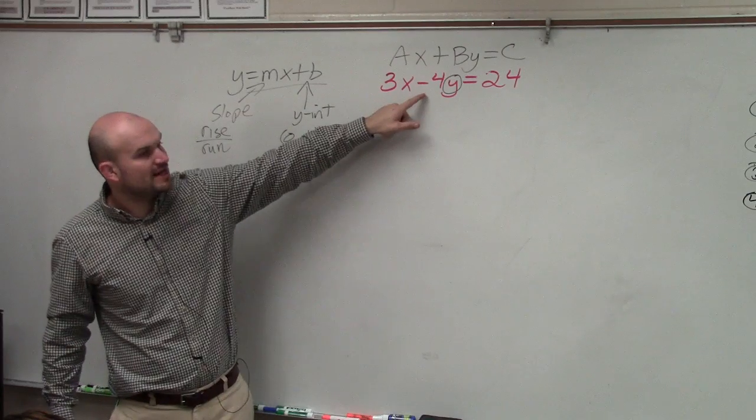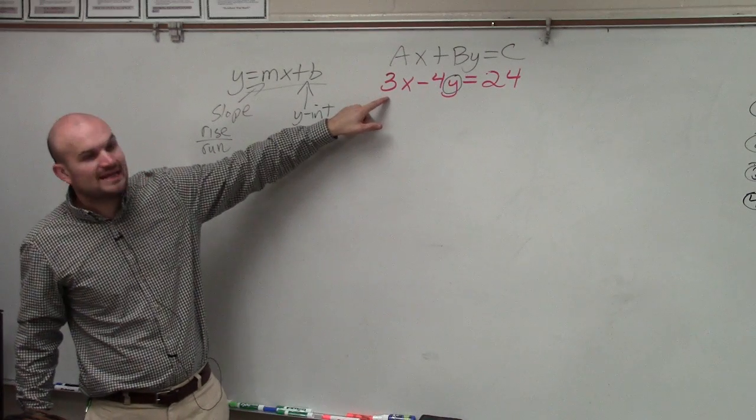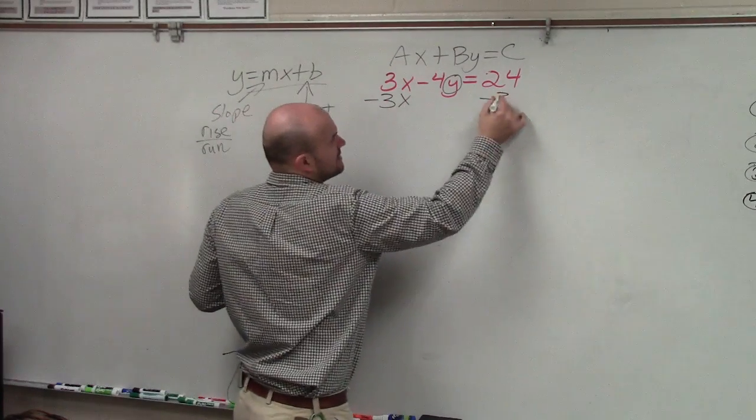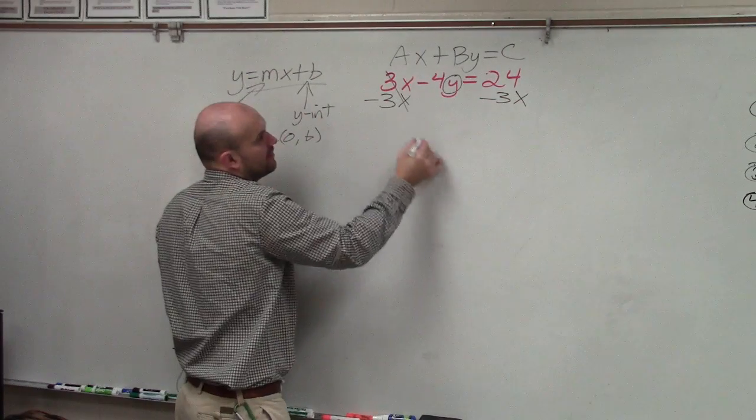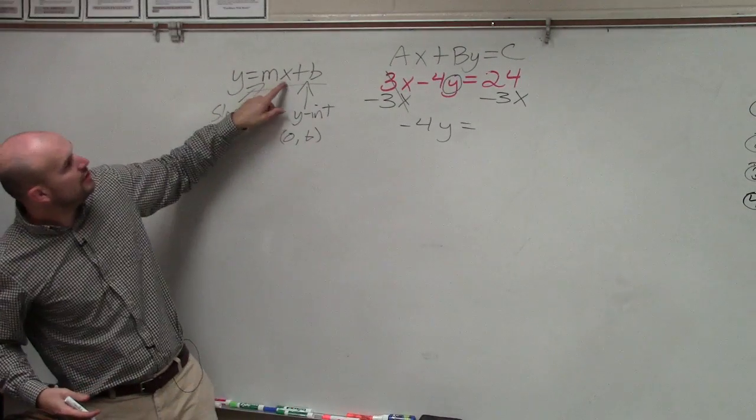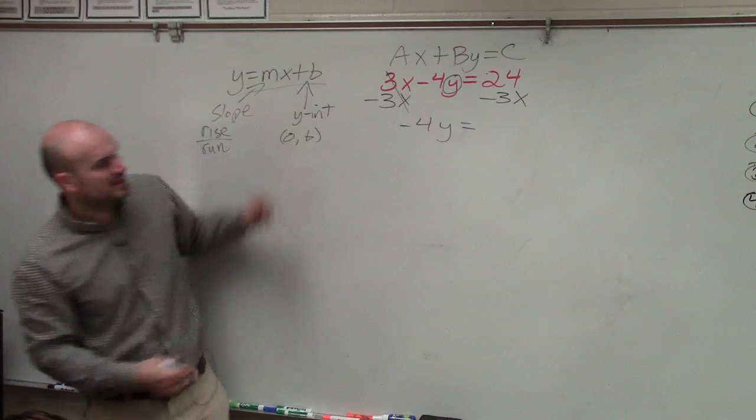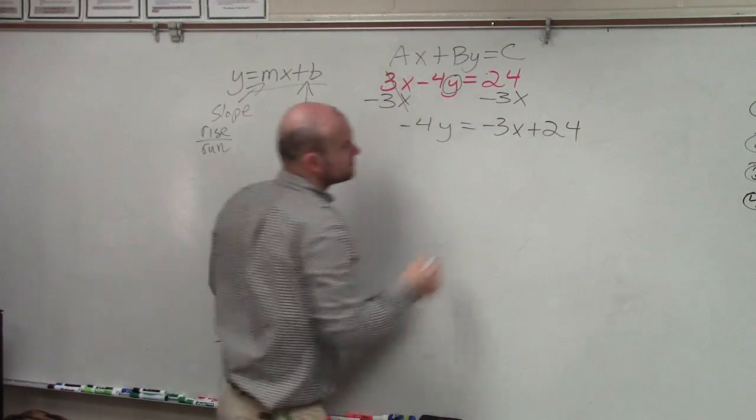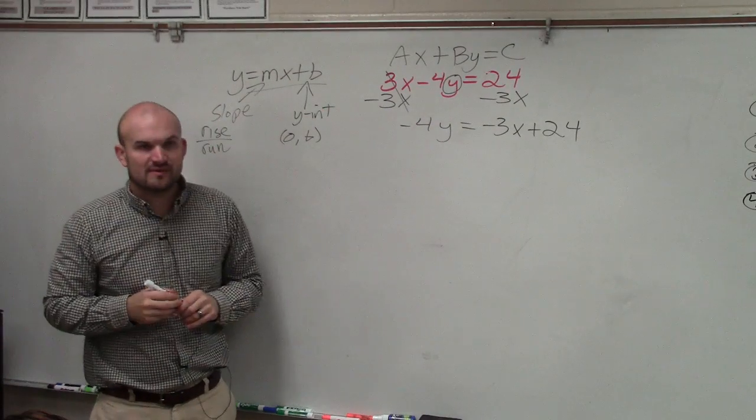So we see our variable is being multiplied by negative 4, and it's being added by 3x. So to undo adding 3x, we subtract 3x. Therefore, I have negative 4y equals. Now, since we're trying to write this equation in this form, notice how the mx is before the b. So I'm going to write negative 3x plus 24. Does everybody follow me so far?